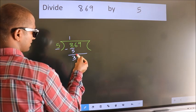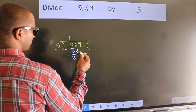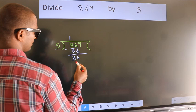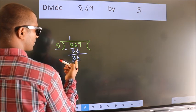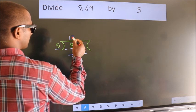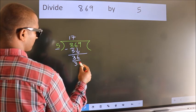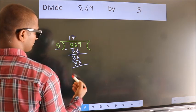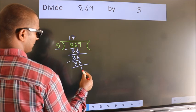After this, bring down the beside number. So 6 down, so 36. A number close to 36 in the 5 table is 5 times 7 is 35. Now we subtract. We get 1.